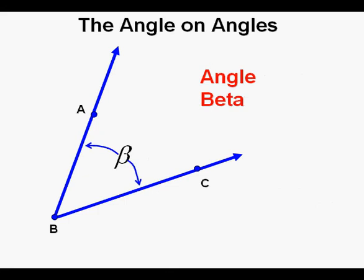An angle can also be named after a Greek letter, usually located in the center area of the angle. This, for instance, is Angle Beta, and Beta is the Greek letter for B.